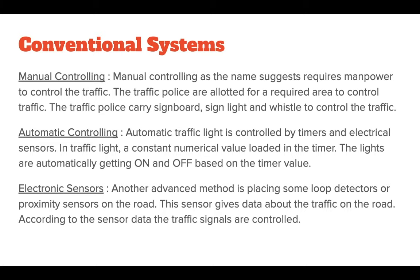The third one is electronic sensors. This is an advanced method which involves placing loop detectors or proximity sensors on the road. This sensor gives data about the traffic on the road and the traffic signals are controlled according to the sensor data.